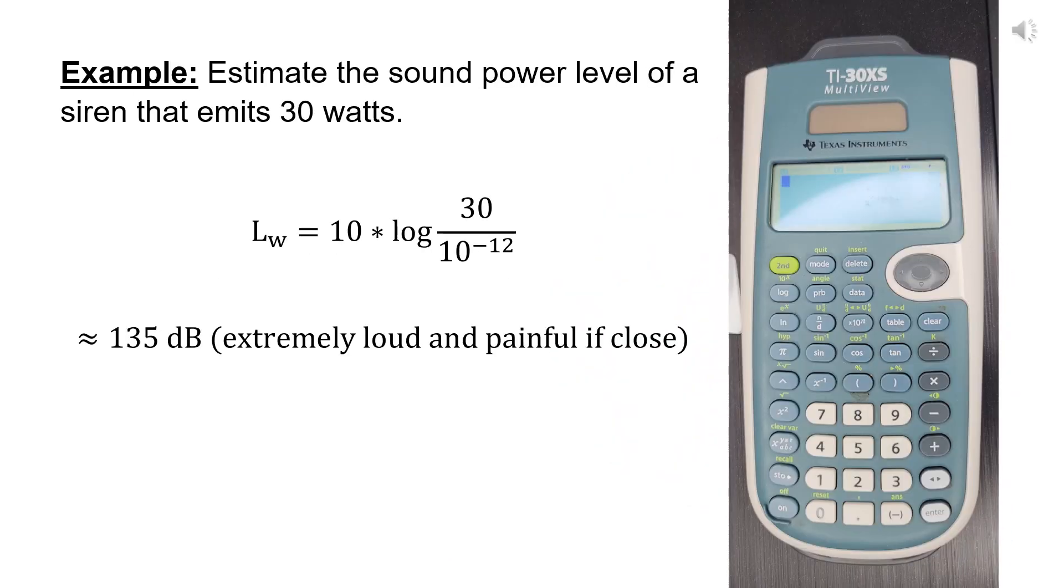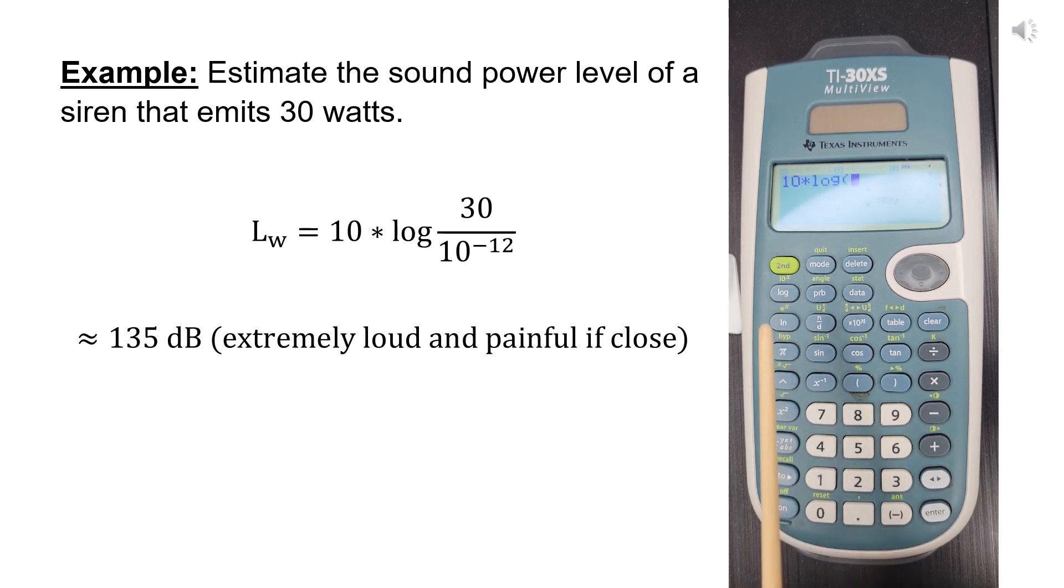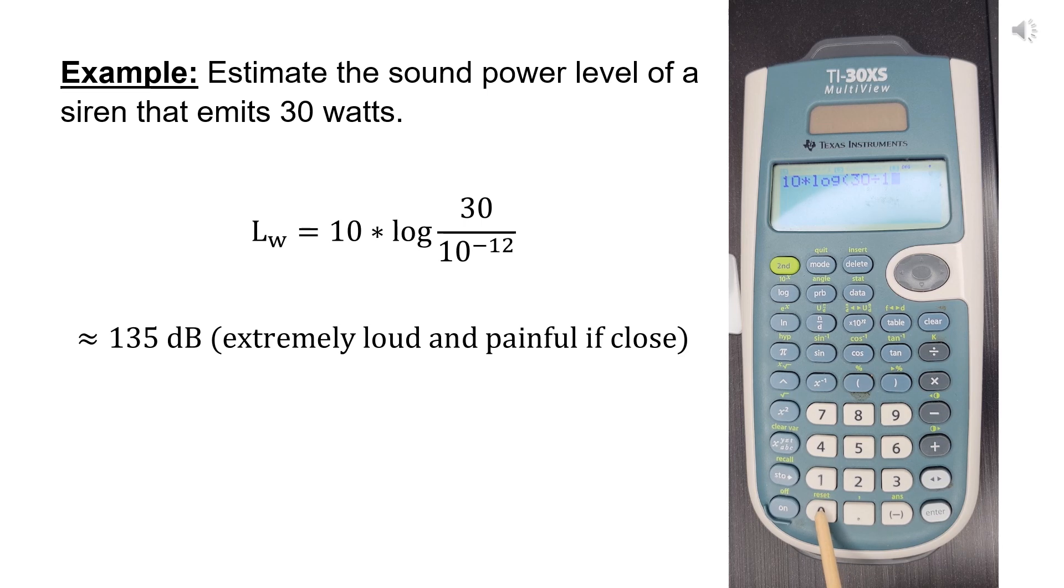For example, estimate the sound power level of a siren that emits 30 watts. The sound power level equals 10 times logarithm 30 divided by 10 to the power minus 12, which equals approximately 135 decibels, which is extremely loud and painful if you are close to the source.